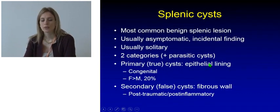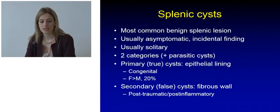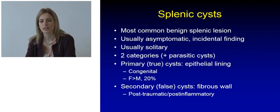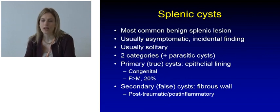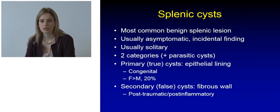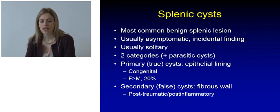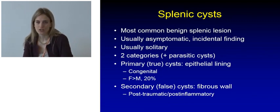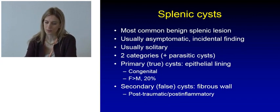The most common benign splenic lesion is splenic cyst, which is usually an asymptomatic incidental finding. Most commonly it's solitary. If we exclude parasitic cysts, we can distinguish two categories: true cysts, which have an epithelial lining, and false cysts, which have a fibrous wall.